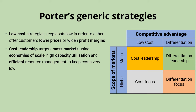The two low cost strategies relate to the left hand side of the matrix, which focuses on the scope of the markets being targeted. You can go for that low cost approach whilst targeting a mass market — everyone within the entire market — or you can do it by targeting a smaller market niche within the wider market.